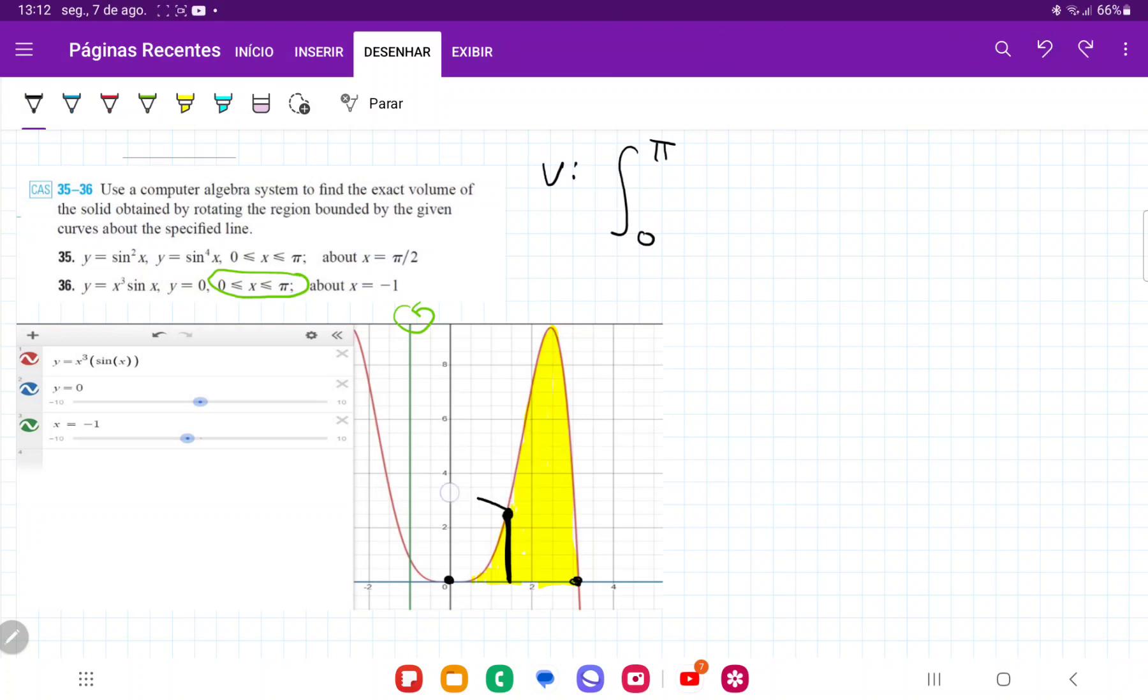So we're revolving the height about the line x is equal to negative 1. So we're going to have a cylinder like so. And so this cylinder, we can think of it as wrapping an infinitely thin sheet of paper around the line x is equal to negative 1. And so when we unwrap it, we are left with an area.